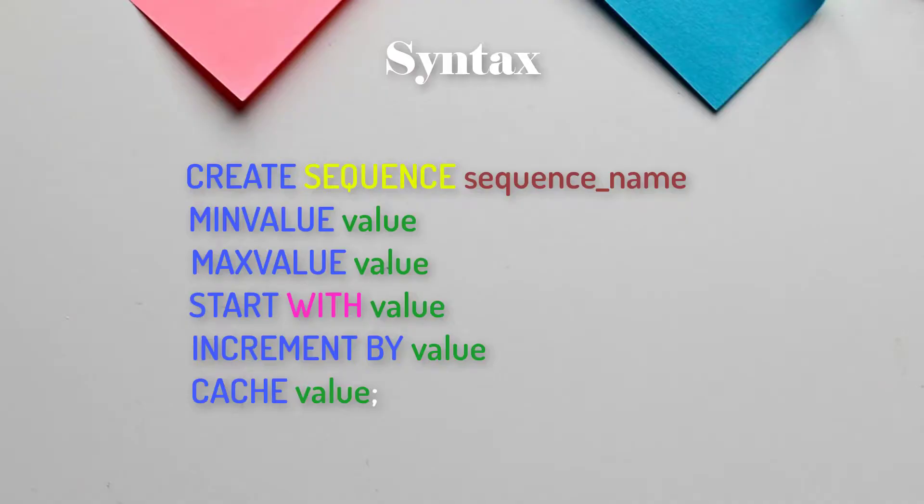This is how you can populate the auto number into the employee_id column using a sequence. To create a sequence, you follow this syntax: CREATE SEQUENCE followed by the sequence name, then MINVALUE for the minimum value, and MAXVALUE for the maximum value.